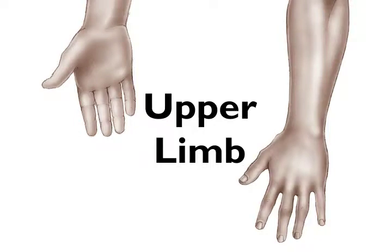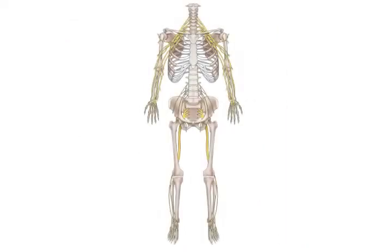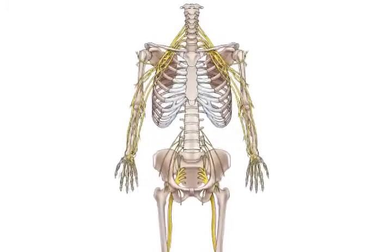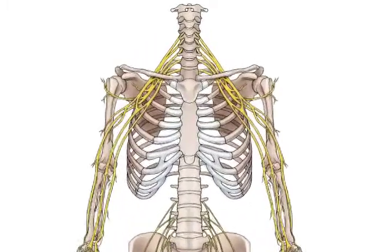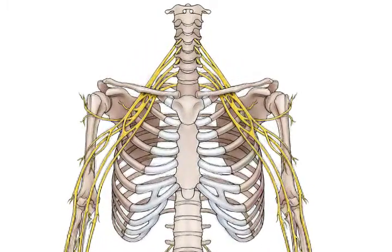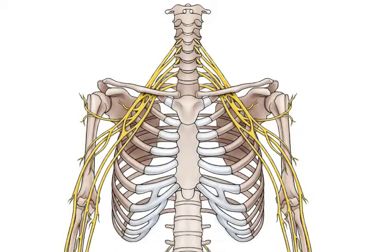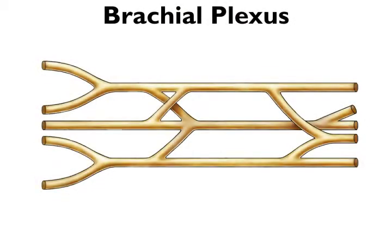We'll start with the upper limb. The nerves to the arm originate in the brachial plexus. This illustration shows the brachial plexus from the anatomic perspective. From here on, we'll go over the brachial plexus using this schematic diagram instead.